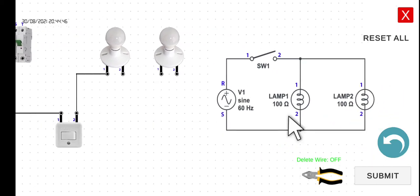And next, the second terminal of our lamp one will be connected back to the S of our circuit breaker.